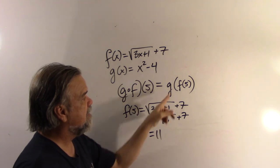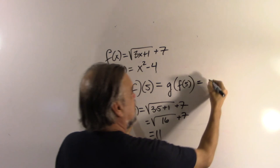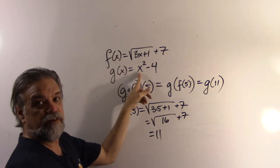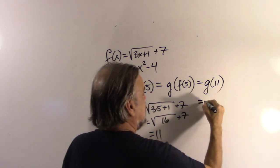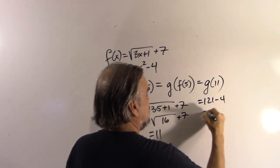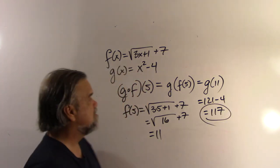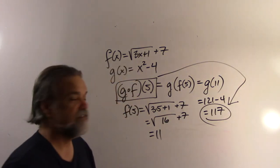So, if I want to find out what g(f(5)) is, well, I just found out what f(5) is. I'll say that's going to be the same thing as g(11). That's going to be 11 squared minus 4. That's going to be 121 minus 4, which is 117. So, that's my answer for g(f(5)). 117.